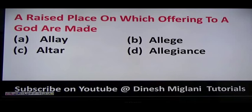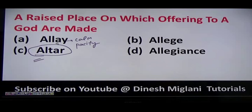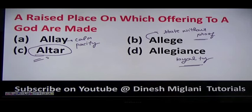The next question: a raised place on which offerings to a god are made — that is altar, 'bedi' in Hindi, where the idol is placed. Also: allay means to calm or pacify; alloy means mixture of two metals; allege means to state without proof, to make an allegation; allegiance means loyalty. The answer is altar.